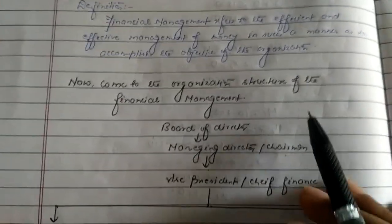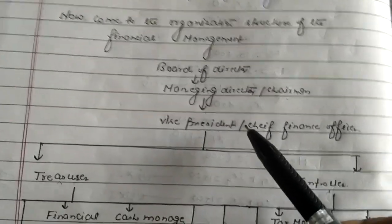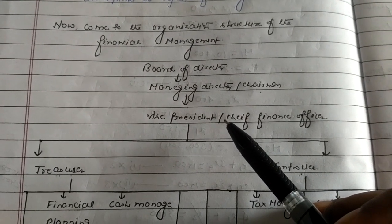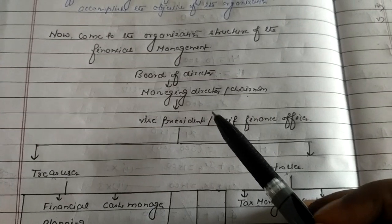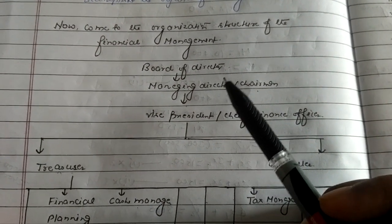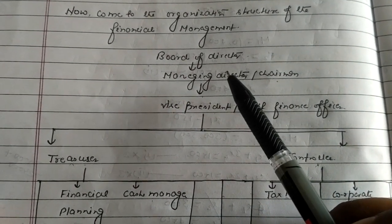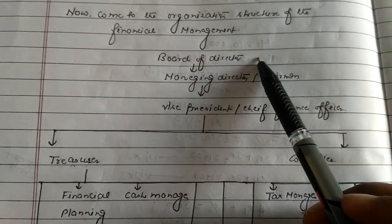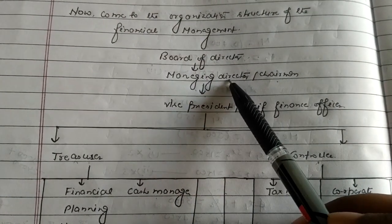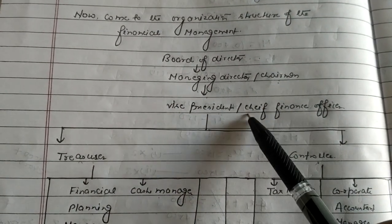Now come to the organizational structure of financial management. As we know, every business organization has its own organizational structure, and financial management also has its organizational structure. The highest authority of financial management is the Board of Directors, then the second highest authority is Managing Director or Chairman, and next is Vice President and Chief Finance Officer, which comes under Managing Director.